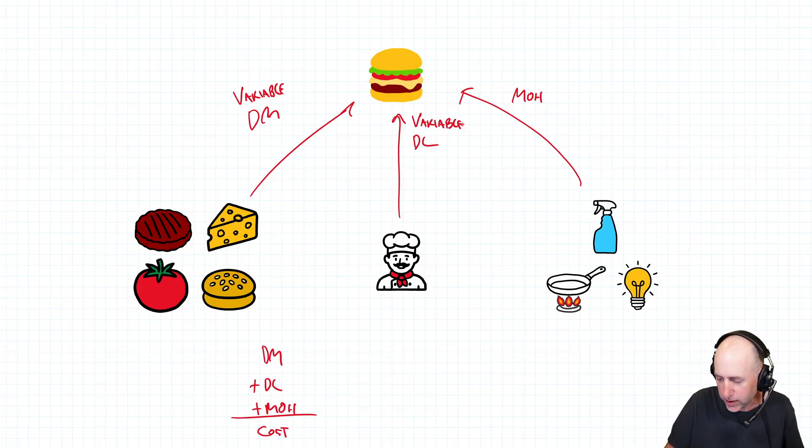factory rent or kitchen rent - totally a fixed cost. Absolutely a fixed cost. But it contains costs that also vary with production. You're going to use more gas to heat the grill if you're cooking more burgers. There is a variable element to that cost. So it contains both variable and fixed both.